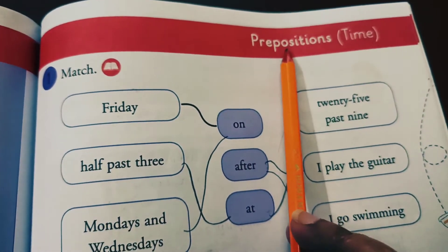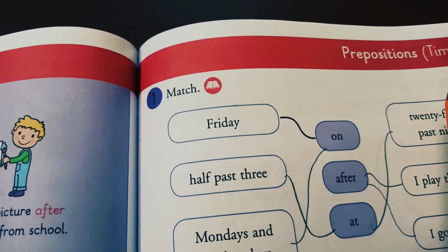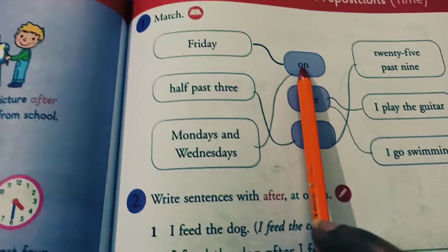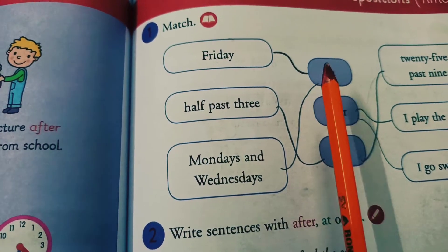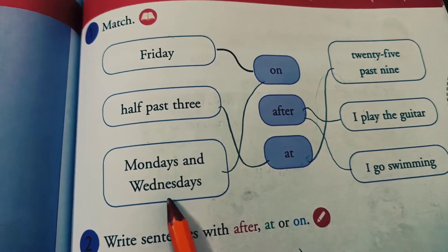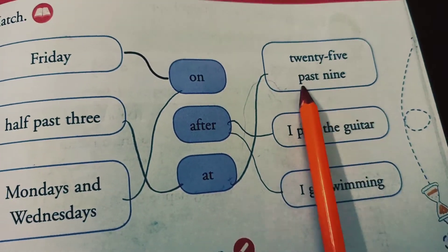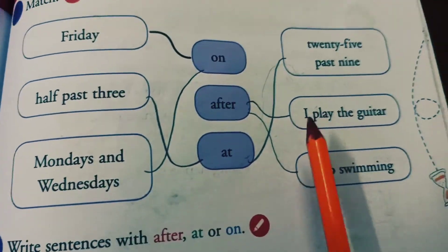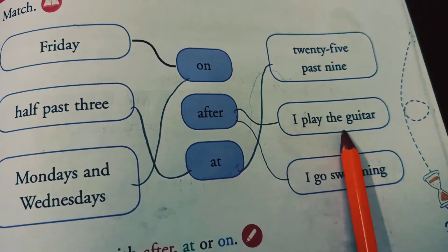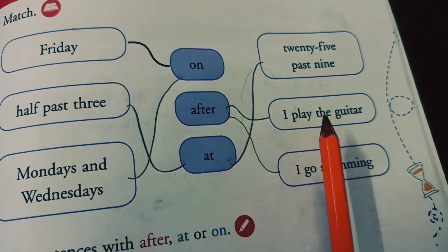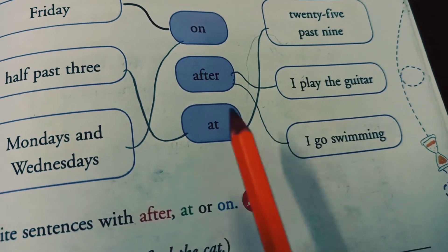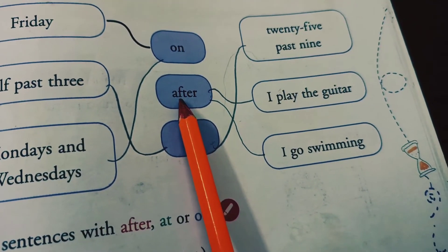Now let's do matching: prepositions of time — after, at, on. Friday is matched with 'on' because when we talk about days, we use 'on'. Half past three is matched with 'at' because it is a specific time. Monday and Wednesday are days so we use 'on'. Nine o'clock is matched with 'at'. I play the guitar — this is connected with 'after': I play the guitar after my lunch. We use 'after' to link two events: I go swimming after I get home.